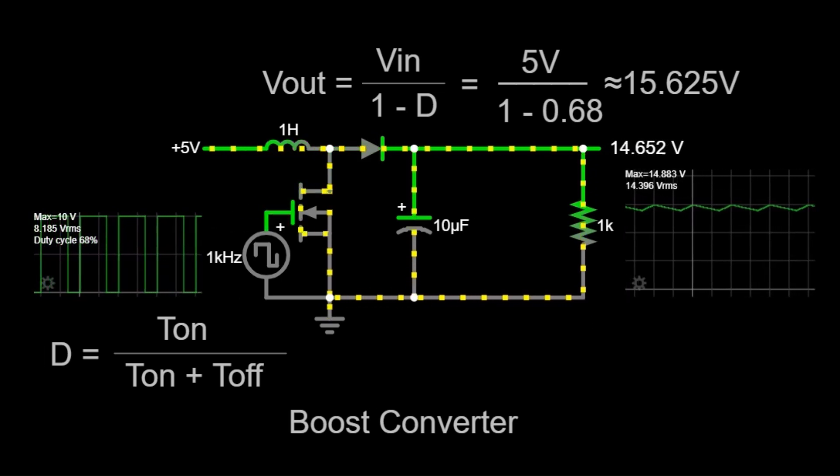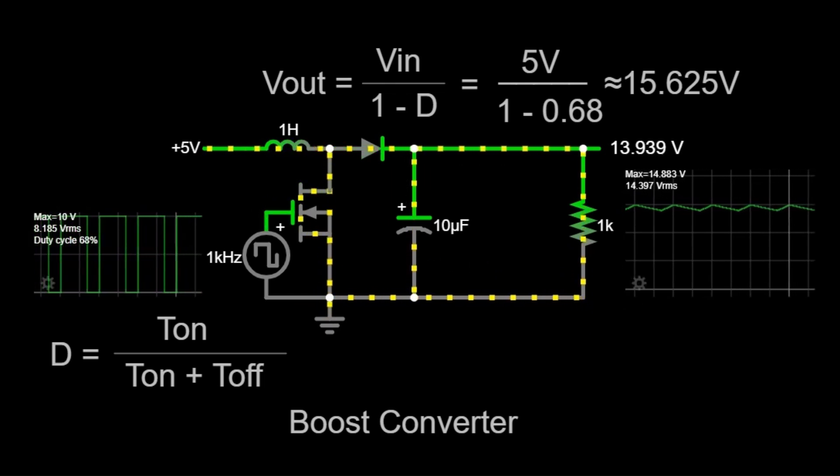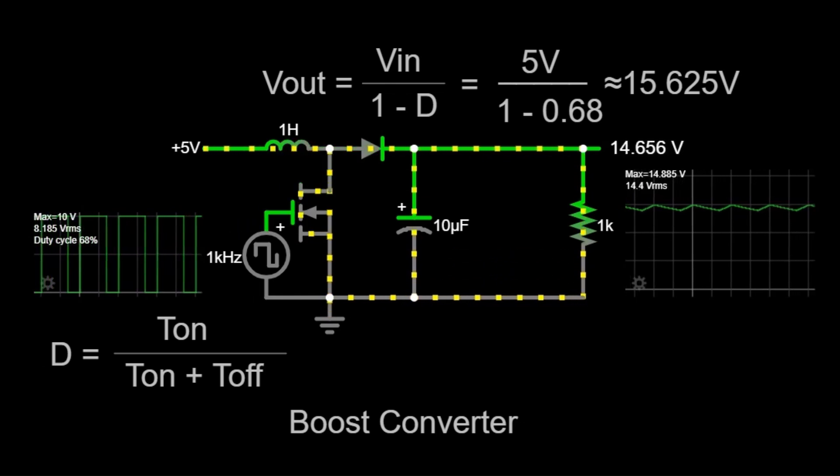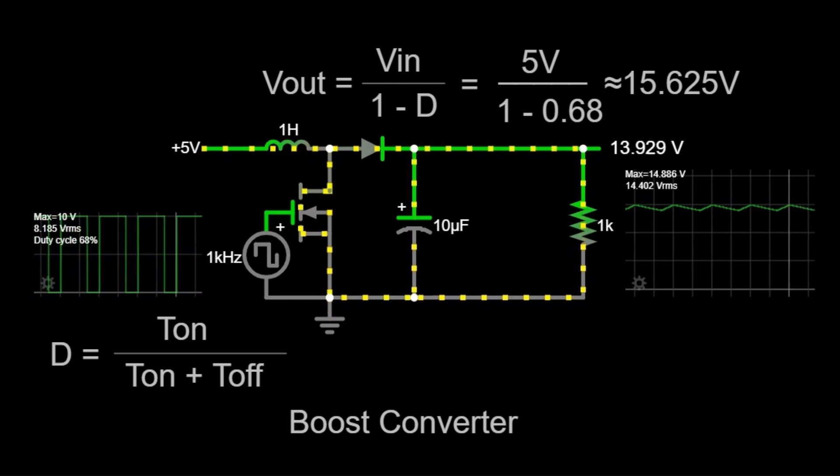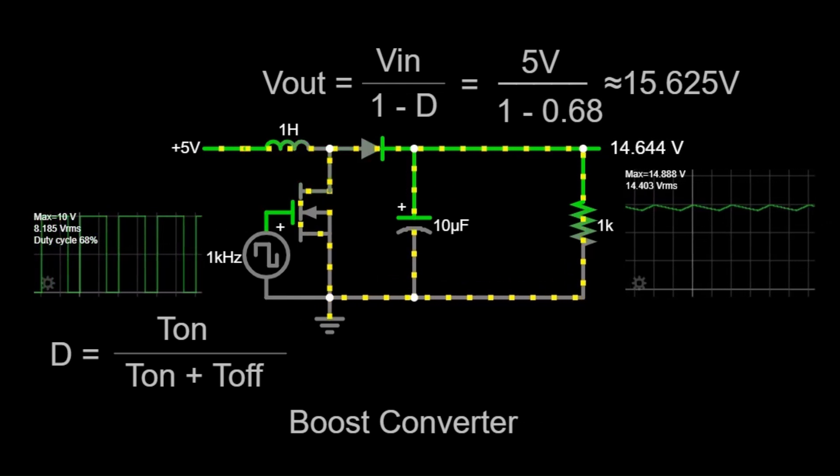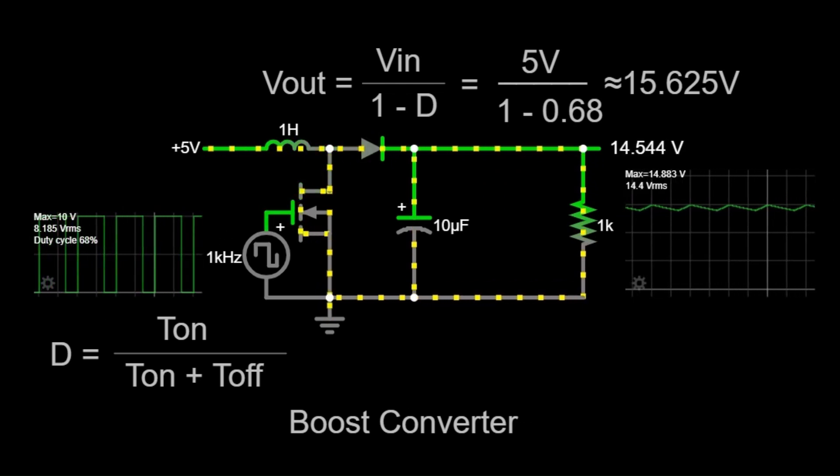When the switch opens, the inductor releases its stored energy. This released energy adds to the input voltage, resulting in a higher output voltage. The diode prevents any reverse current, ensuring that the energy flows towards the output and charges the capacitor. This combined effect of the input voltage and the energy released from the inductor boosts the output voltage.